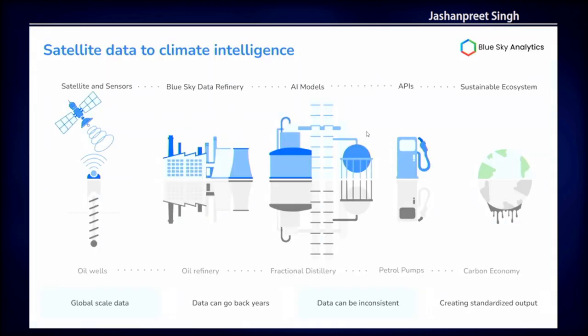Just to give you context of what kind of data we're dealing with and what we exactly do, this is what our backend and all of our infrastructure looks like. We have satellite data coming at a regular frequency and we're essentially creating a refinery to process that satellite data. Then we have an analytics engine which is crunching that data, creating new datasets, putting it into a database, and giving it out as APIs which you can visualize on your platform or use internally.